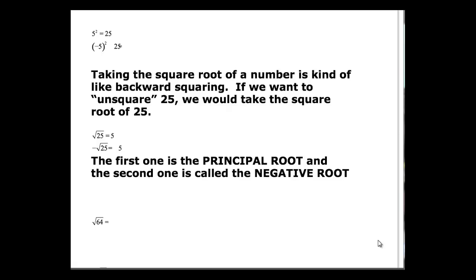When you take the square root then, it's kind of doing squaring backwards. You're going to unsquare 25 in this case. So we would take the square root of 25. And we take the square root of 25 and we get 5. If we had the negative square root of 25, it would also be 5.